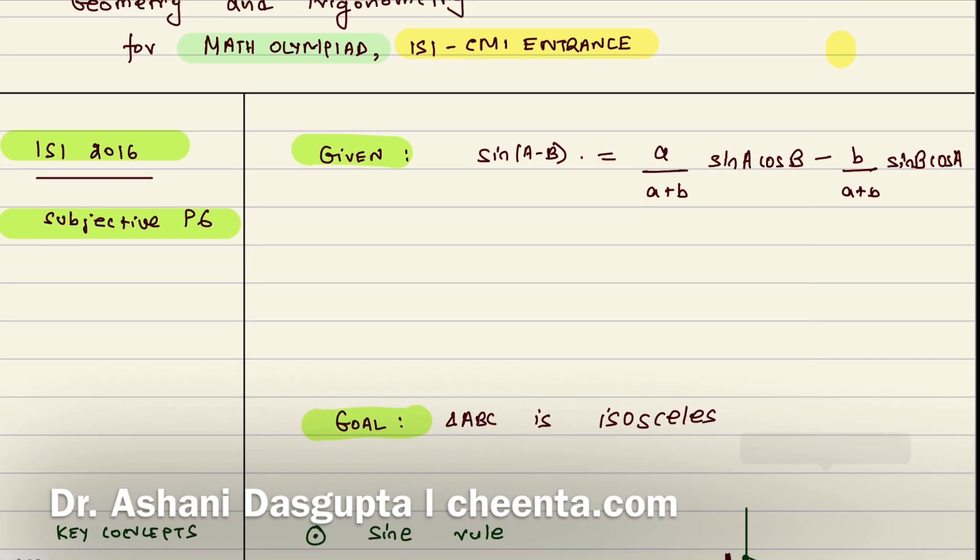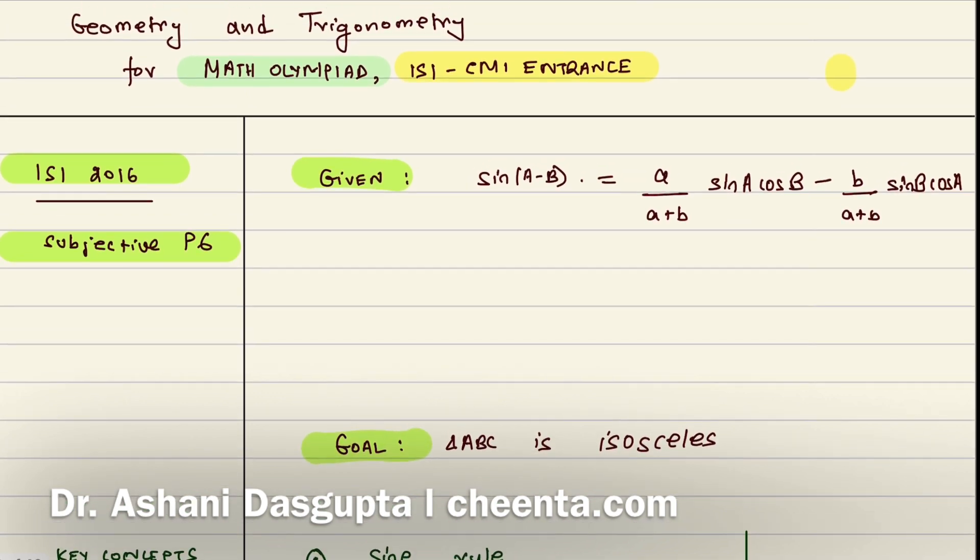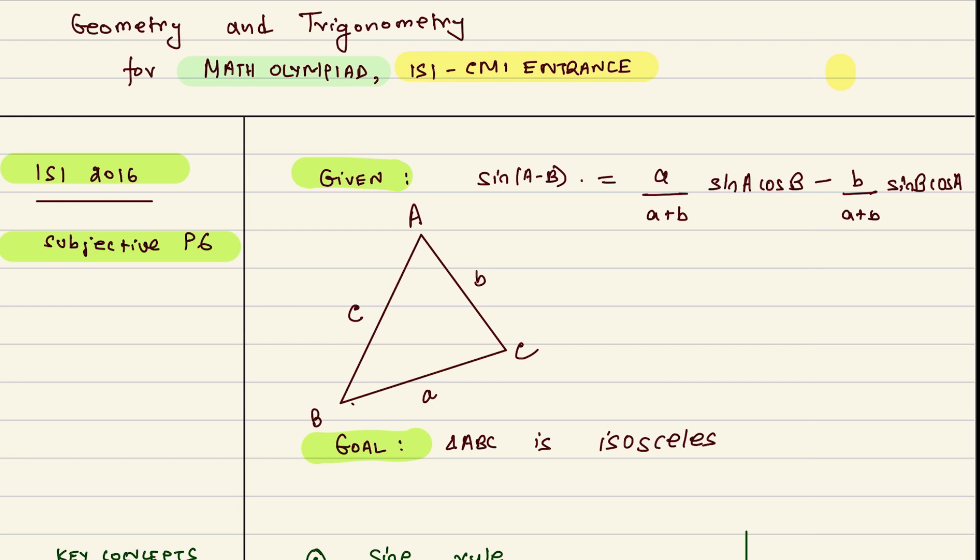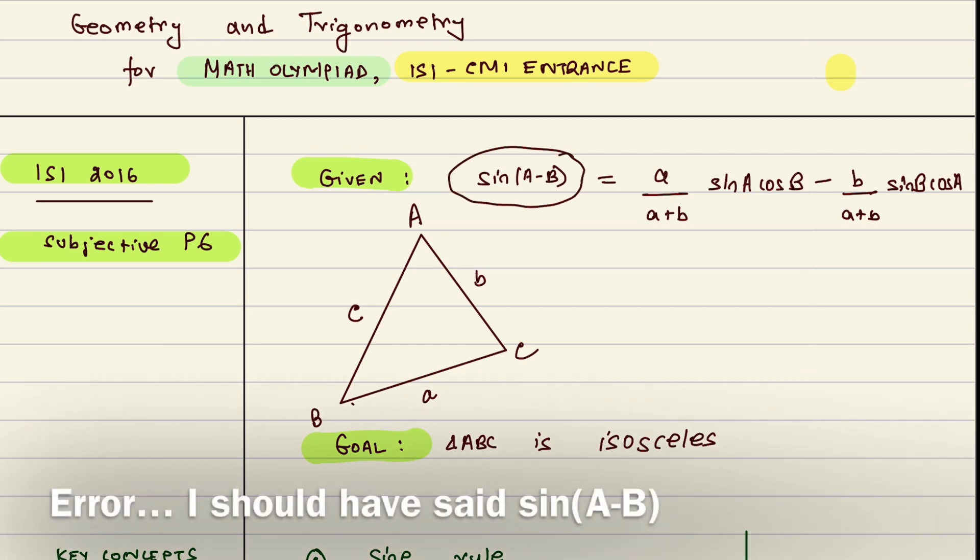Remember, our goal is not just to solve this problem in this video, we want to learn something that can be used in other problems. So let me tell you what is given in this particular problem. There is a triangle ABC and the side opposite to vertex a is denoted by small a, the side opposite to vertex b is denoted by small b, and the side opposite to vertex c is denoted by small c. It's a standard way to denote sides and angles of a triangle.